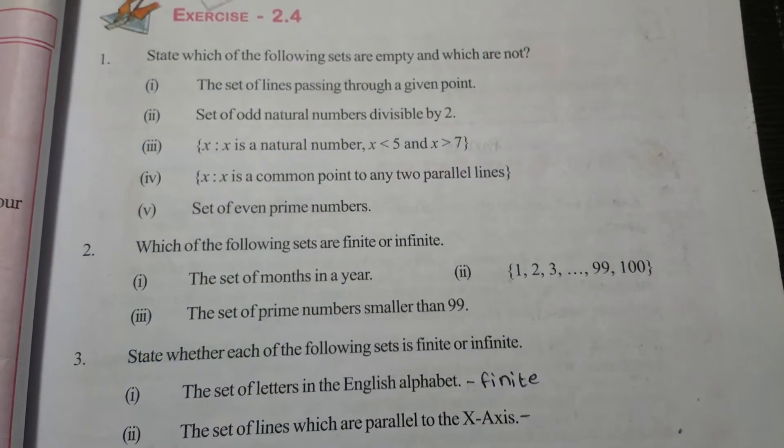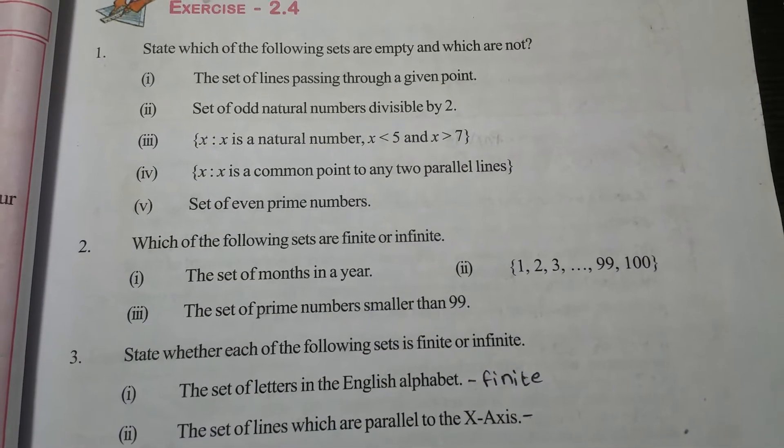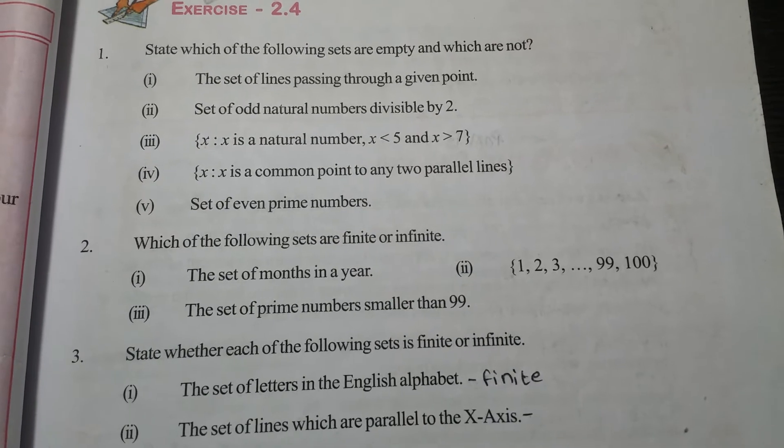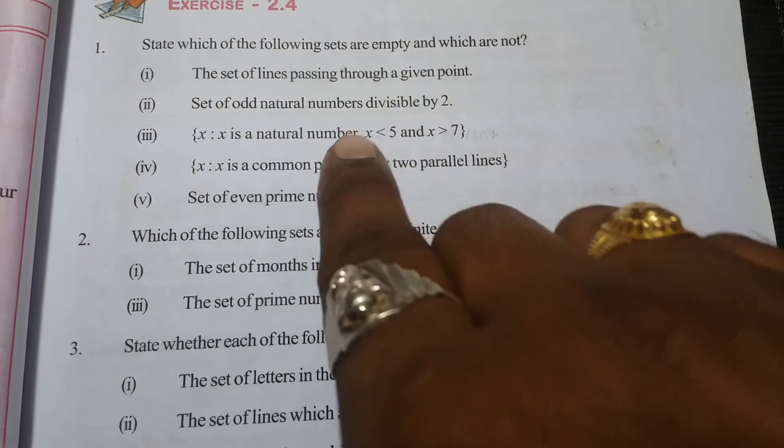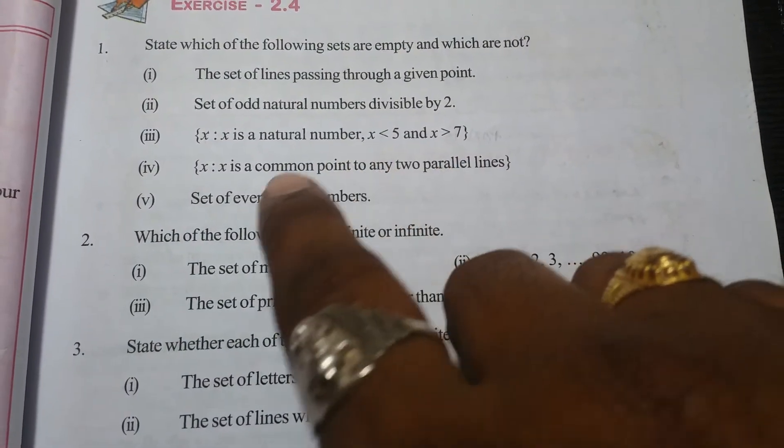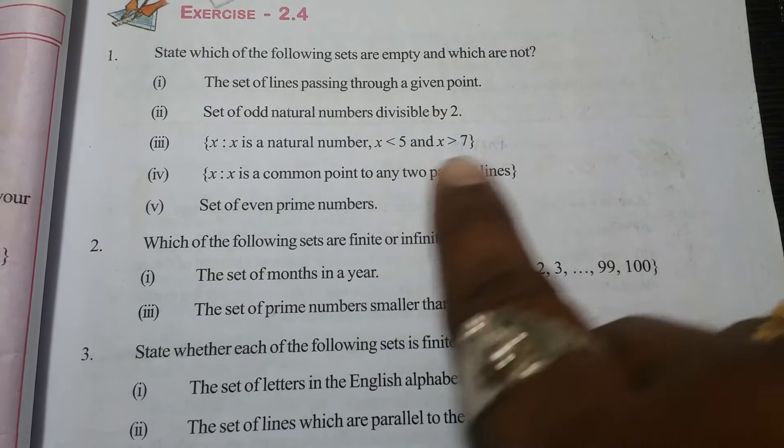X such that x is a natural number, x is less than 5 and x is more than 7. There is no natural number which satisfies this condition. Therefore, it is an empty set.